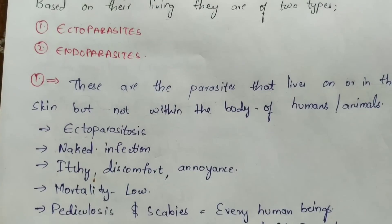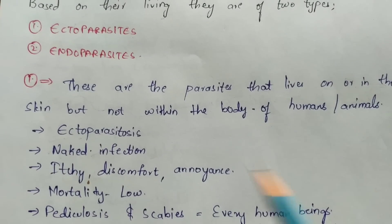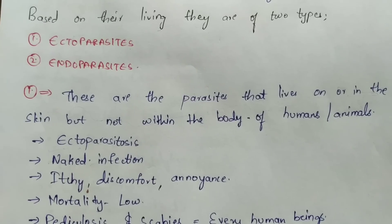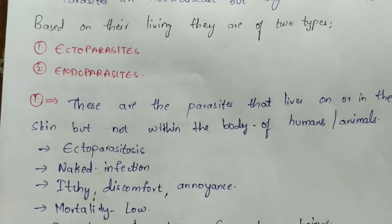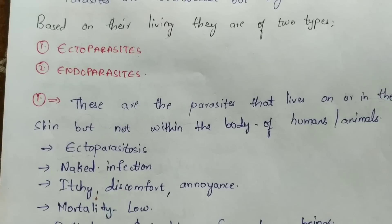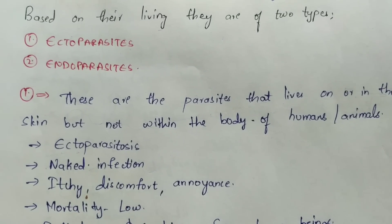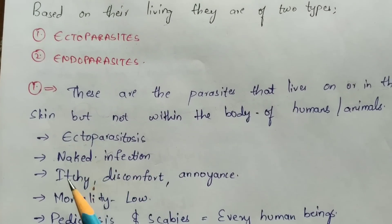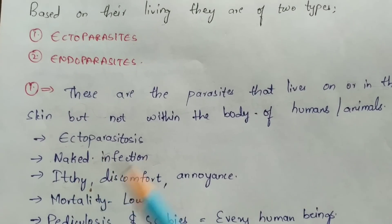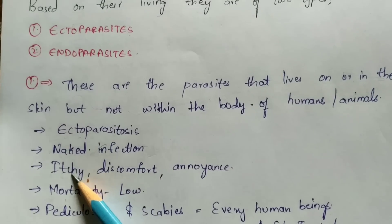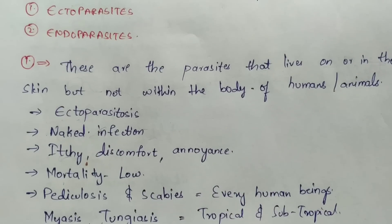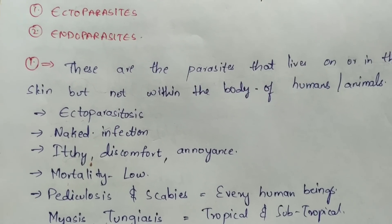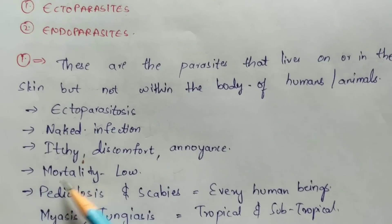The disease caused by ectoparasites is called ectoparasitosis, and it is a naked infection — meaning the infection on the skin layer is visible as red, daughter-like structures on the skin. Symptoms caused by ectoparasites on the body include itchiness, discomfort, and annoyance — meaning a feeling of mental disturbance.